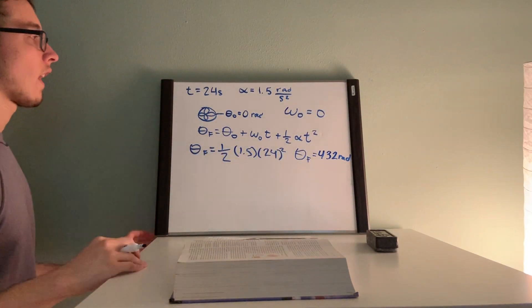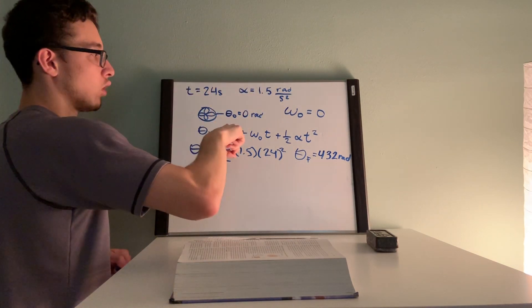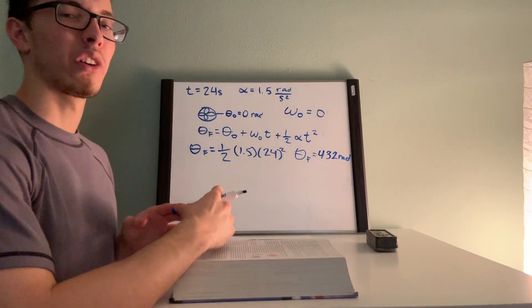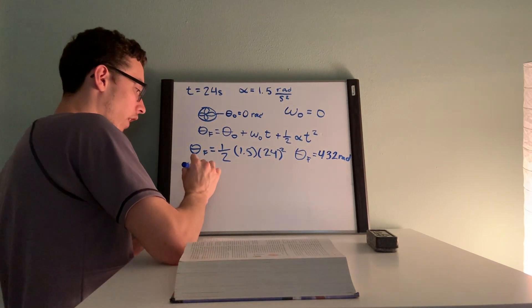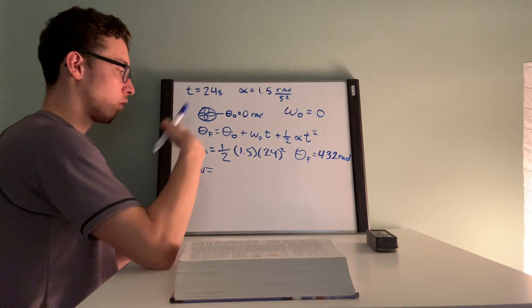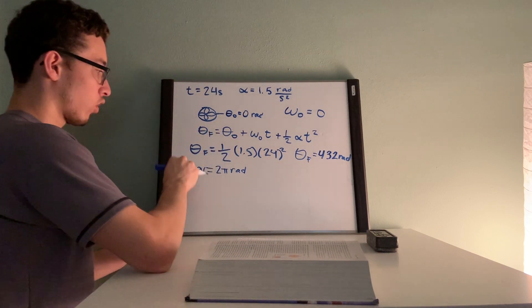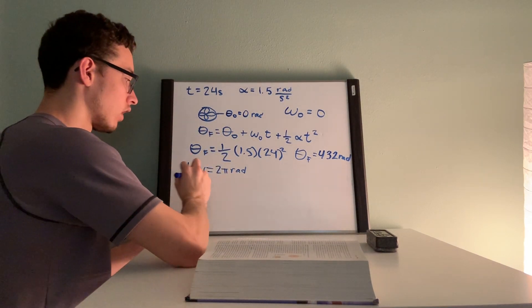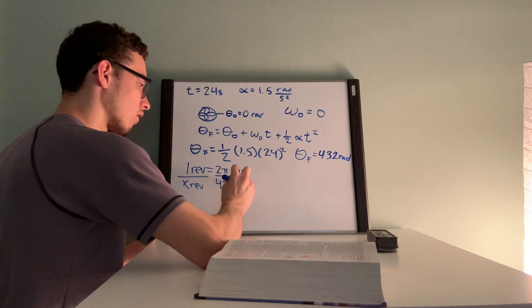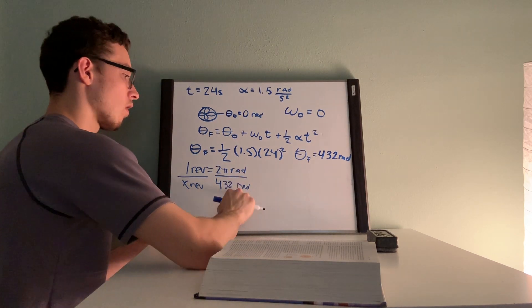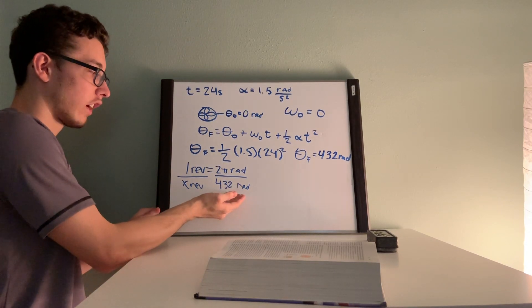432 radians, this is how much we rotated, started at zero radians, 432 radians. So now we need to solve for how many revolutions that was. We can set up a conversion factor. We know that one revolution in trigonometry on the unit circle is equal to 2π radians. So one revolution is to 2π radians just as x revolutions is to 432 radians.